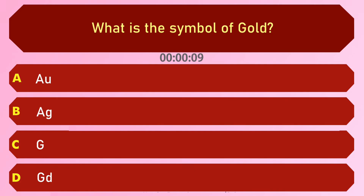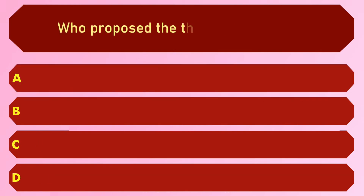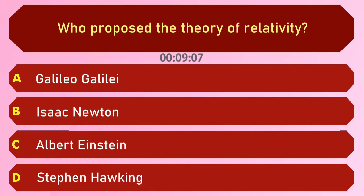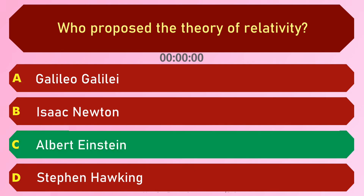The answer is option A, Au. Who proposed the theory of relativity? Options are: A) Galileo Galilei, B) Isaac Newton, C) Albert Einstein, and D) Stephen Hawking. The answer is option C, Albert Einstein.